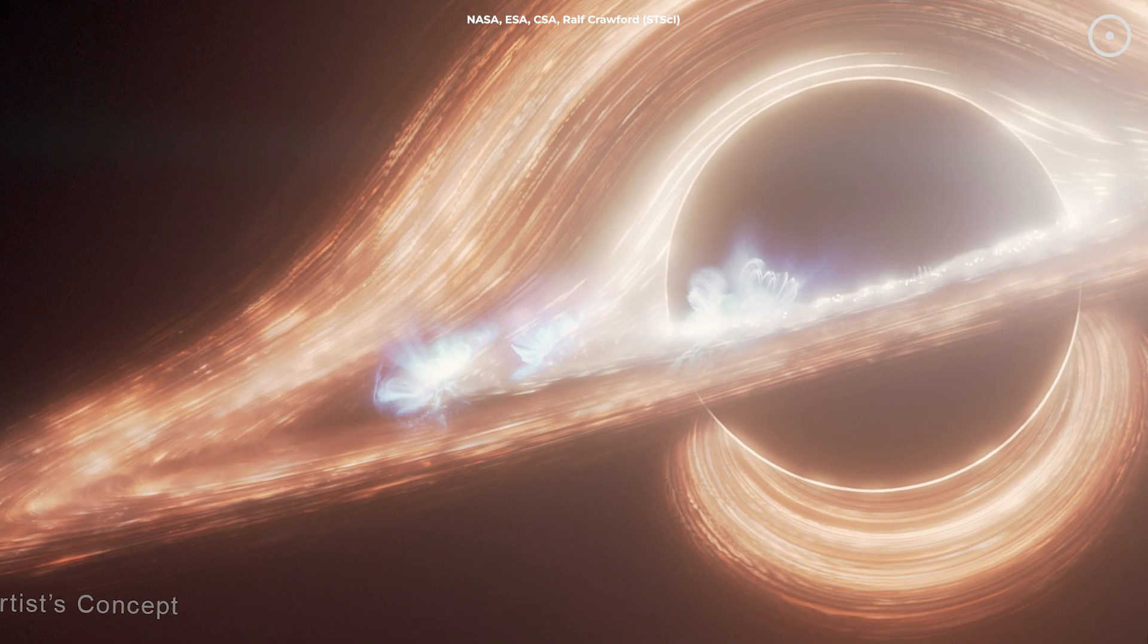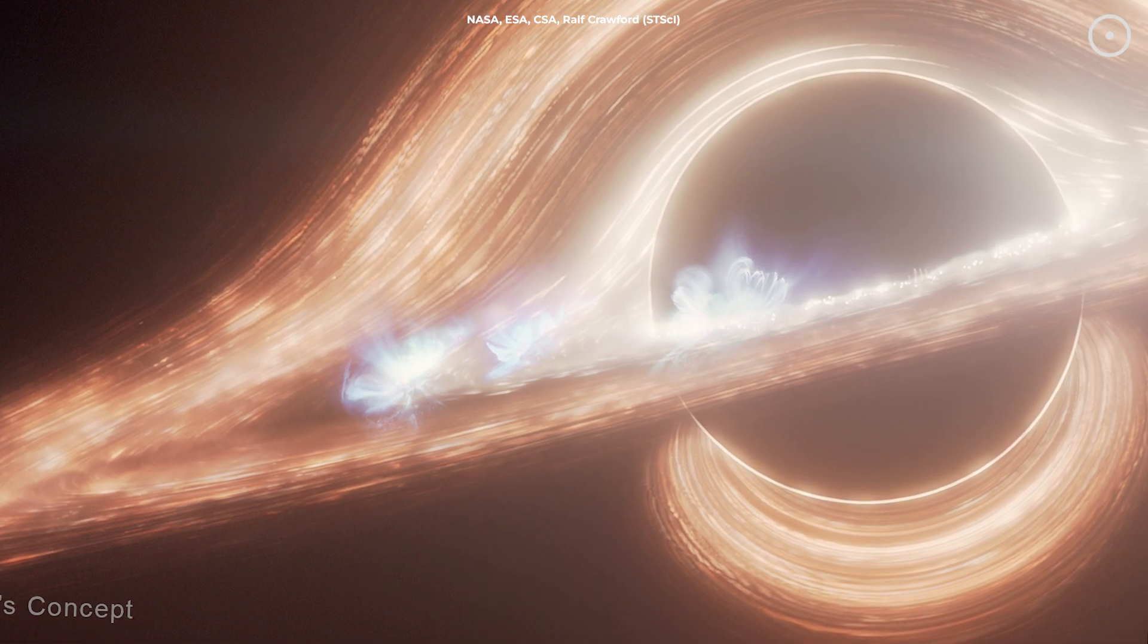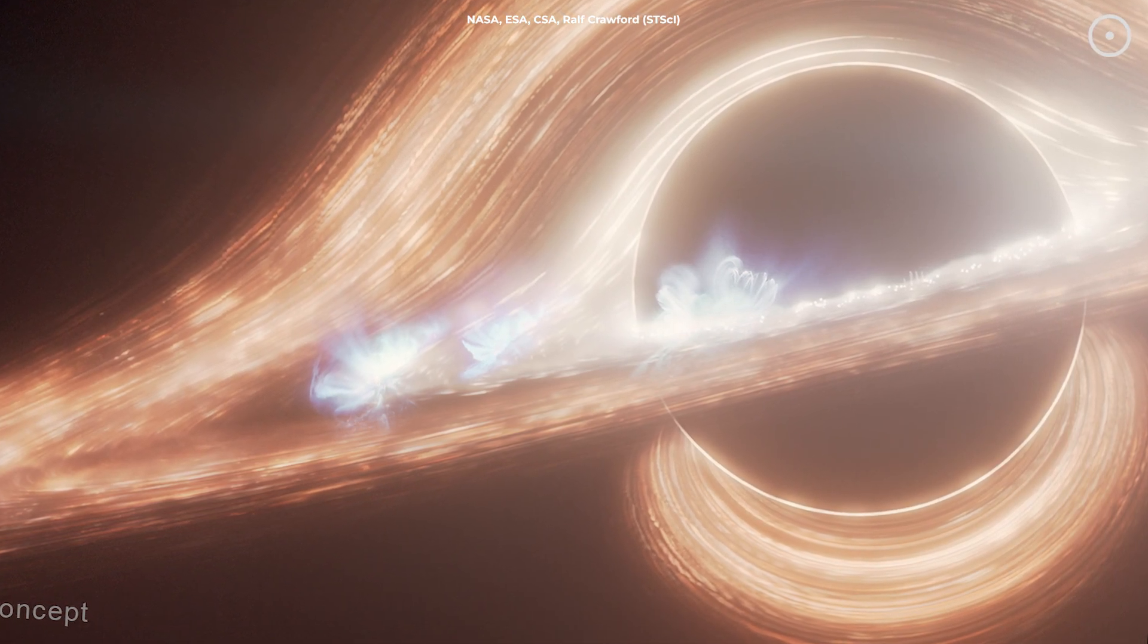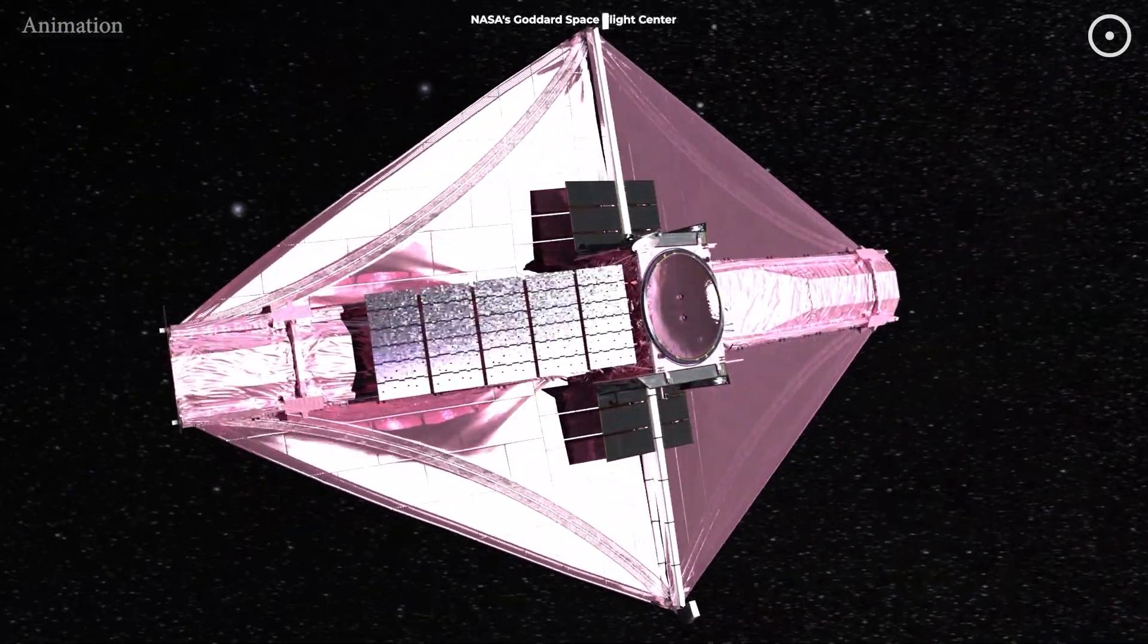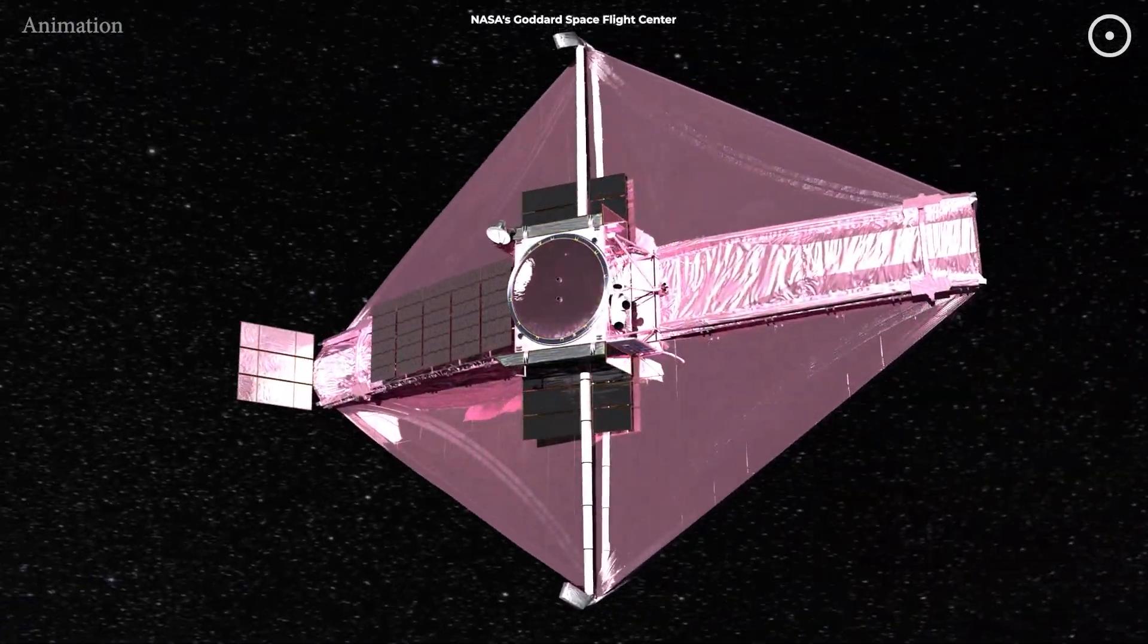Now, what makes this discovery so revolutionary is that we've never seen this kind of constant activity before. Previous telescopes could only give us glimpses, like trying to watch a fireworks show through a keyhole. But Webb's infrared vision lets us see the whole picture.